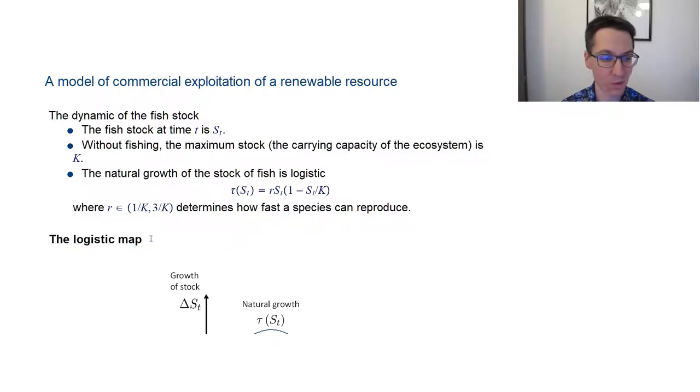Now, one detail I have to point out is that r here is said to be between 1 over K and 3 over K. Normally, I could have written, for instance, r times st divided by K, but this is really just to simplify the notation later on, because you get quadratic terms everywhere otherwise.